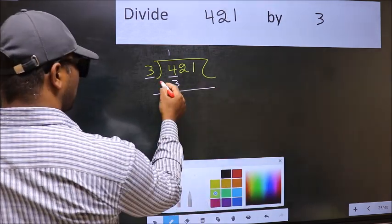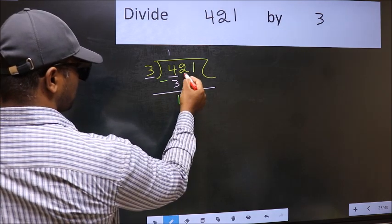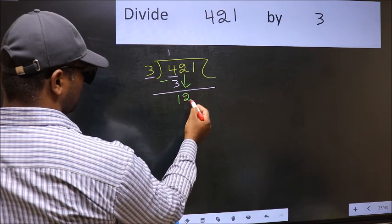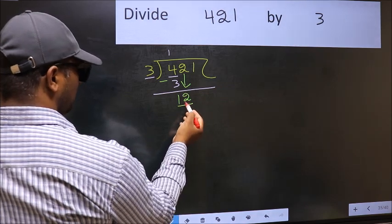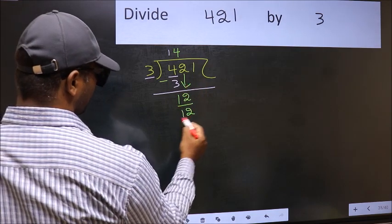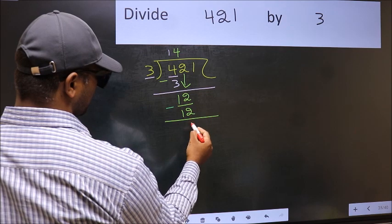Now, you should subtract. 4 minus 3, 1. After this, bring down the beside number. So, 2 down. Now, 12. When do we get 12 in 3 table? 3 4's, 12. Now, you should subtract. 12 minus 12, 0.